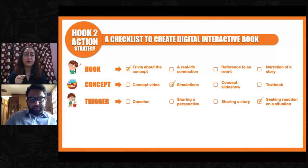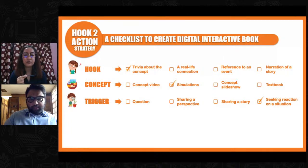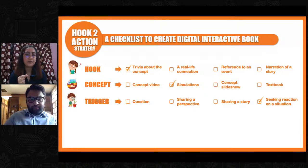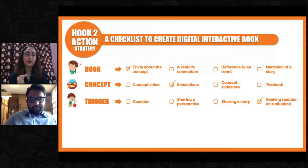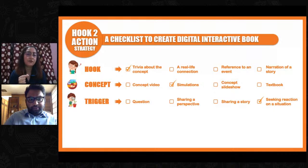For the trigger section, the idea is to make students think more about the concept — why a certain situation is happening, why a certain process occurred. For this, we can give 'did you know' questions, ask students to share a perspective on an issue, tell a story, give role plays, or present a situation seeking a reaction. For example, in connection to the solar system: 'What if air or atmosphere didn't exist on Earth? What would happen?' or 'Why is the moon called a natural satellite of Earth?' Such questions create a trigger in the students' minds to think more deeply.